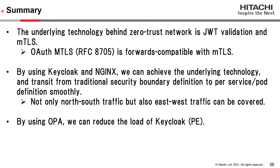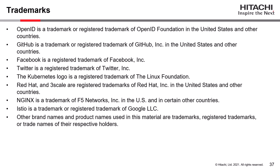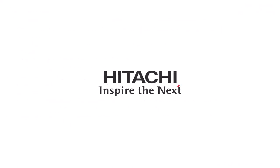Finally, this is today's session summary. The underlying technology behind the Zero Trust network is JWT validation and mTLS. OAuth mTLS defined by RFC 8705 is backwards compatible with standard mTLS. By using Keycloak and NGINX, we can achieve the underlying technology and transit from traditional security boundary definition to per-service or per-port definition smoothly. Not only north-south traffic but also east-west traffic can be covered. And by using OPA, we can reduce the load of Keycloak. Thank you for listening.